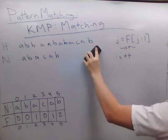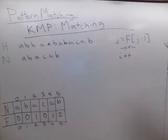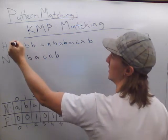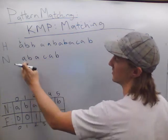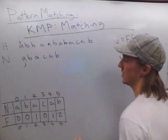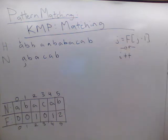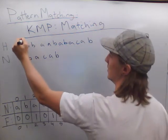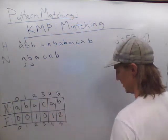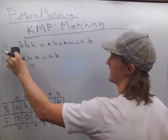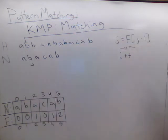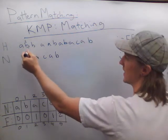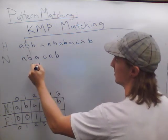Inside the haystack, we're going to have index i. Inside the needle, we're going to have index j. When they do match — like a and a — we're going to increment both variables i and j. Now we match again: b and b match, so increment i and j.